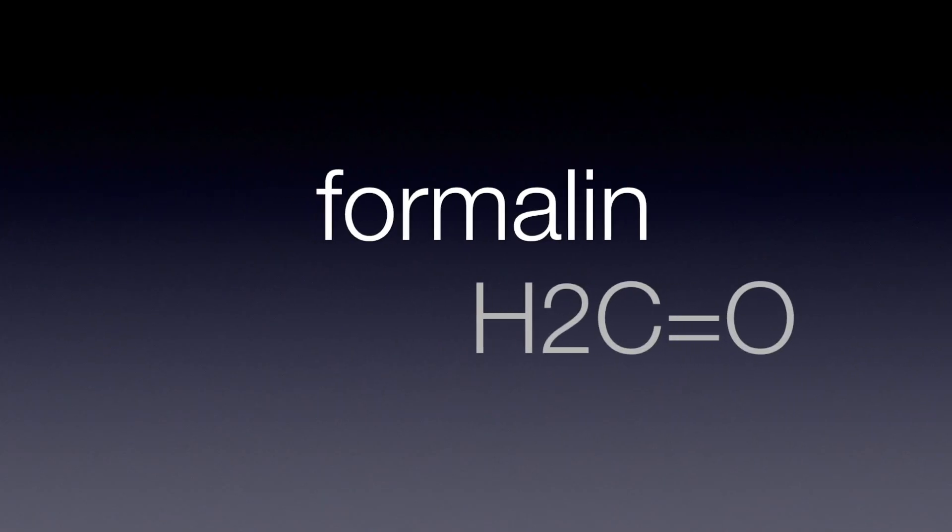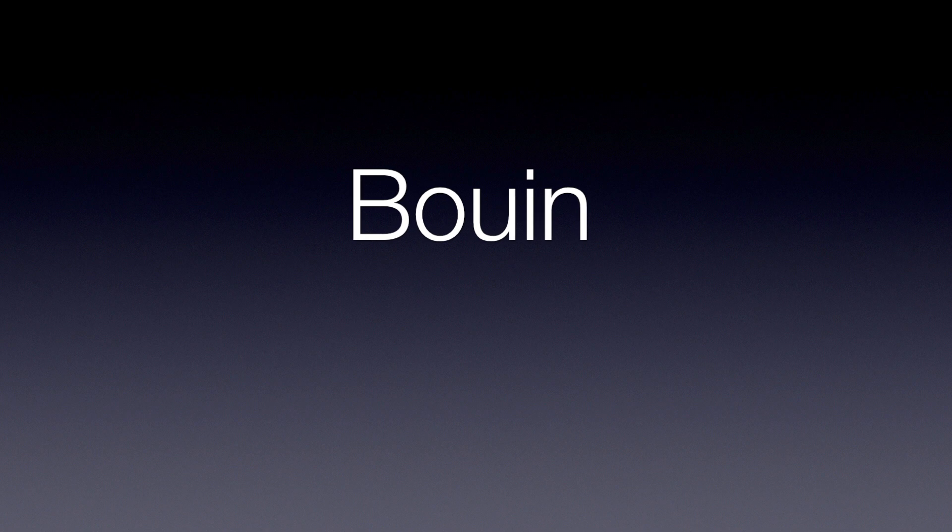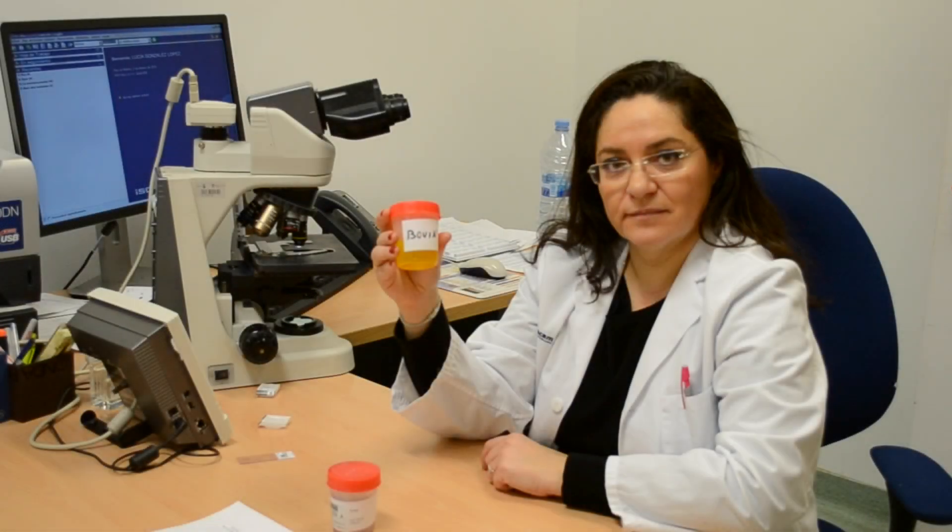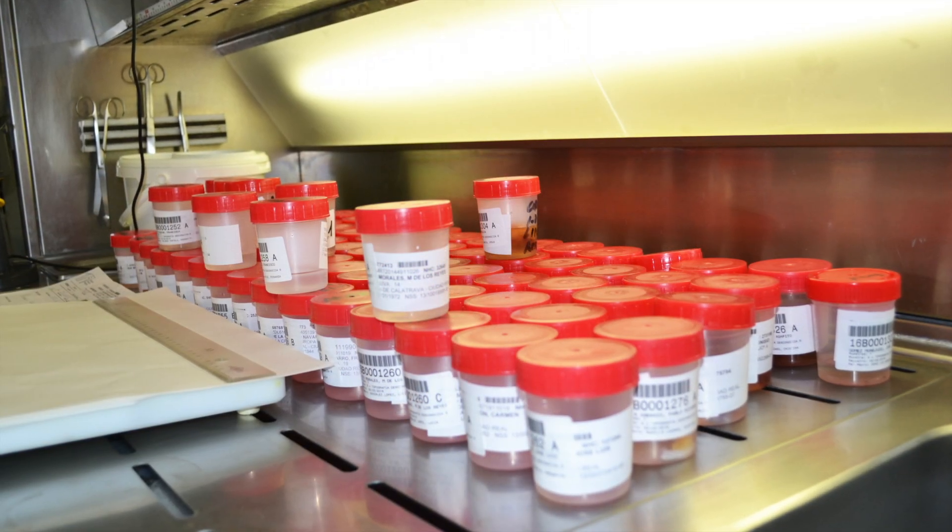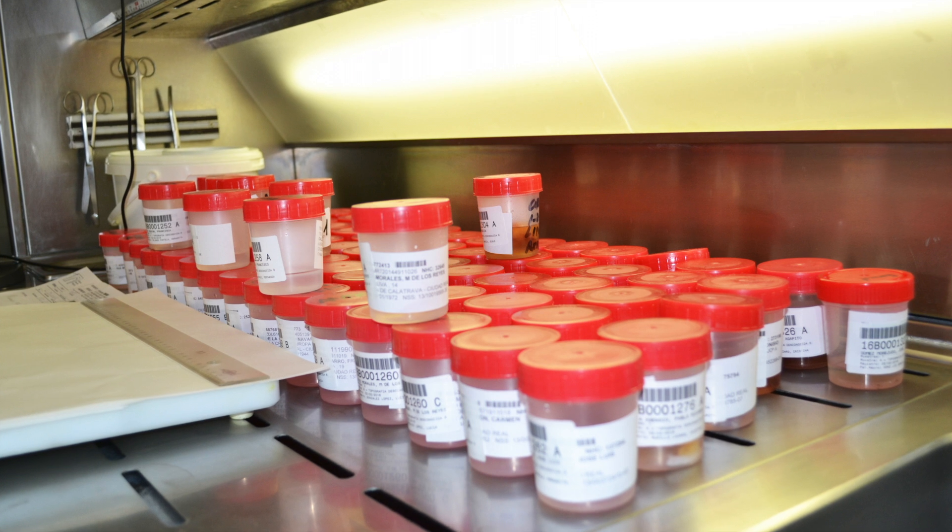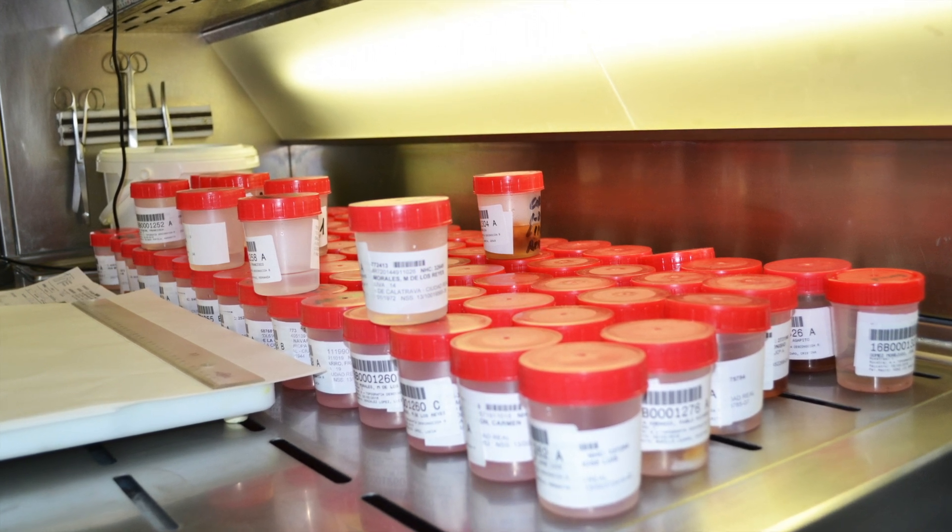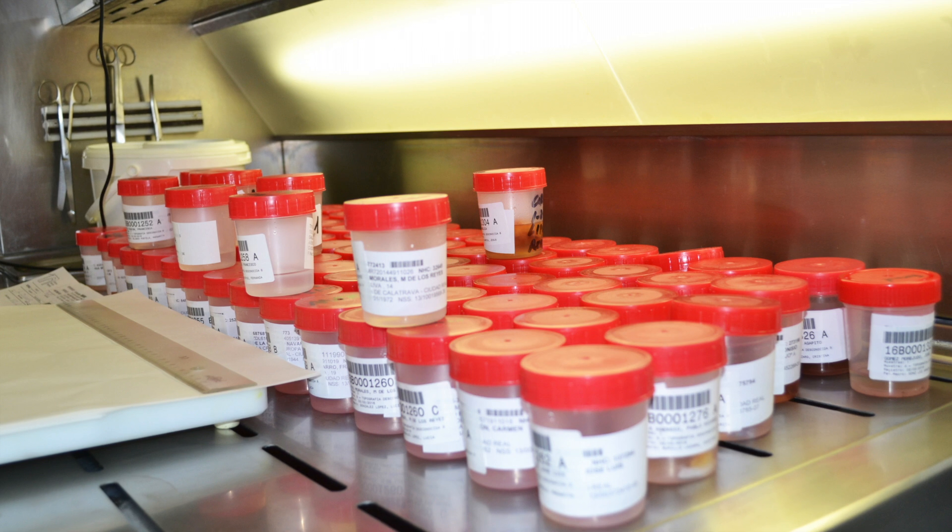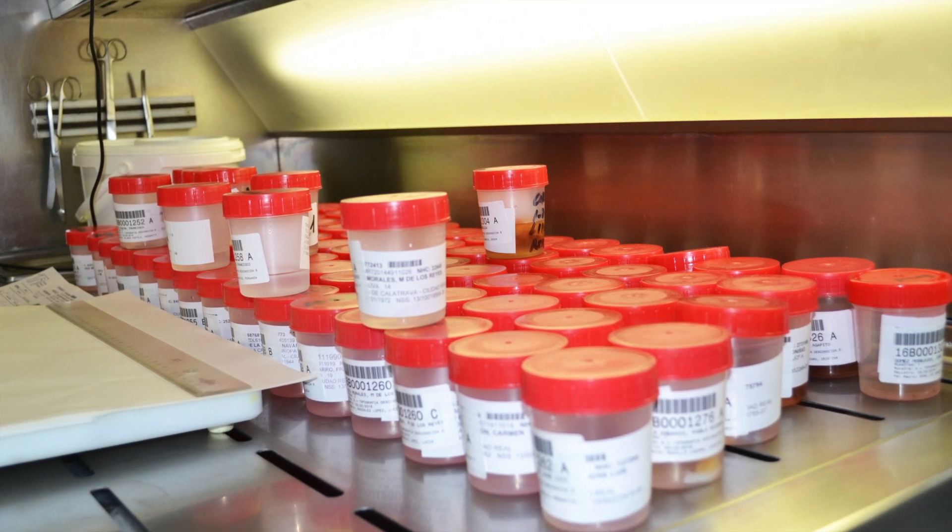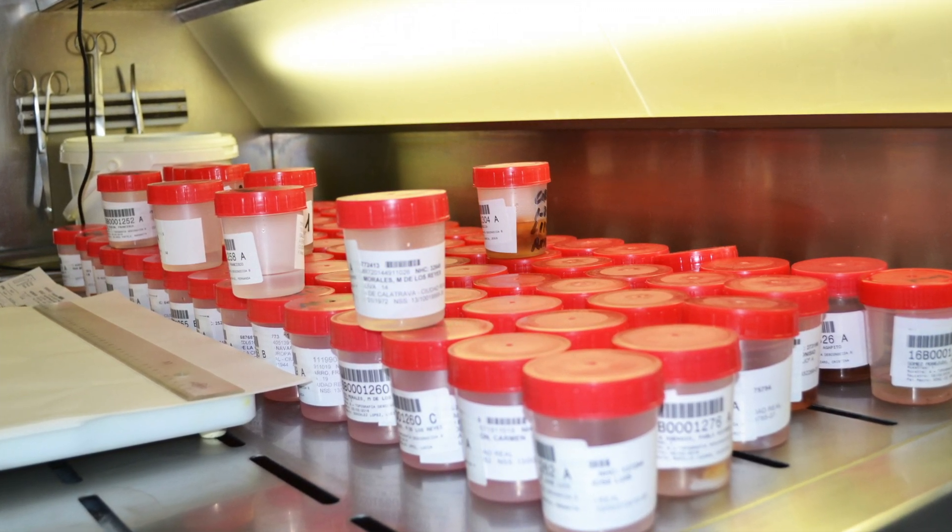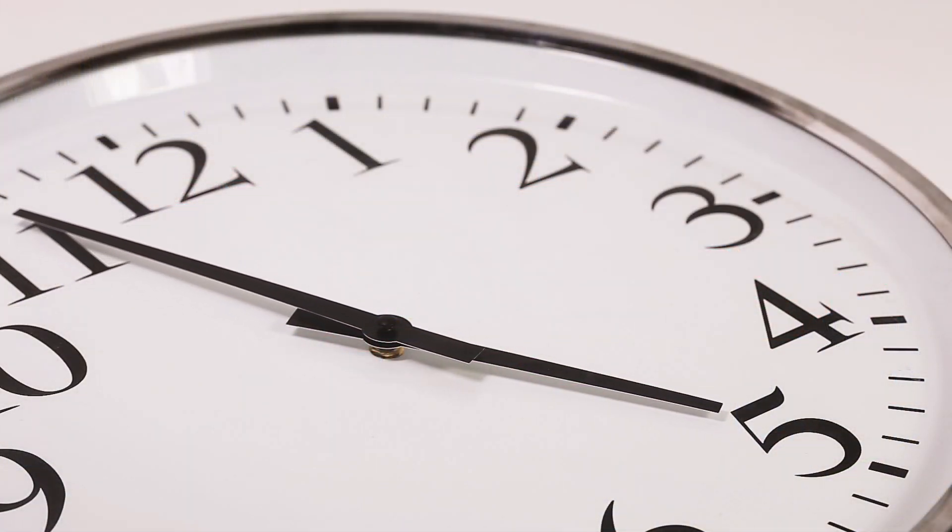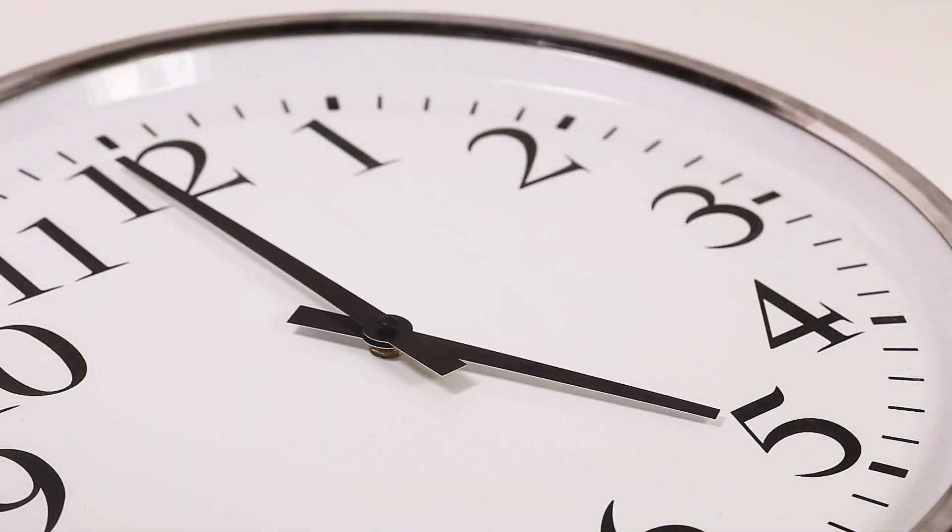One of the most commonly used fixatives is formalin, which is formaldehyde dissolved in water. Other fixatives are used, such as Bouin's liquid, which is of a yellowish color and is a mix of components used to fix the DNA or the proteins. Sometimes the fixative needs to decalcify tissue, as in the case of bones. During fixation, formaldehyde attaches to primary amines to form a stable cross-link. This process is slow and can take up to one or two days, on average 24 hours.